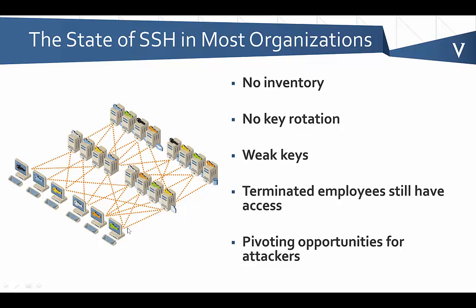If an attacker breaks into one of these systems, they can leverage these connections between systems to do what's called pivoting — moving from one system to the next throughout the organization to reach a broader number of servers. This can allow what was initially a compromise of one system to spread very quickly across multiple systems.